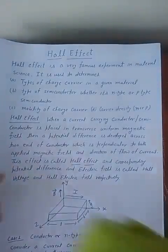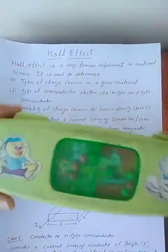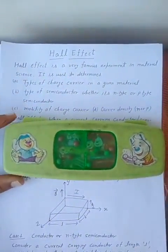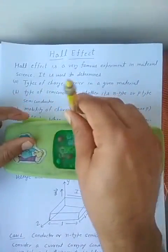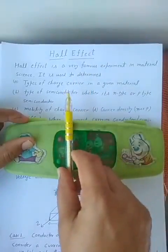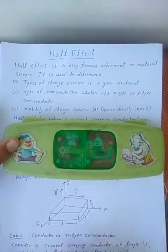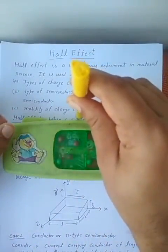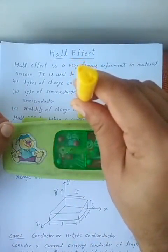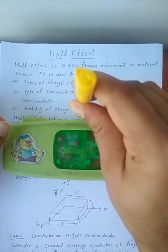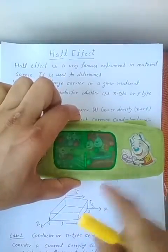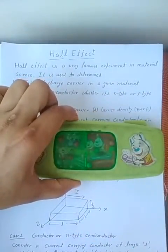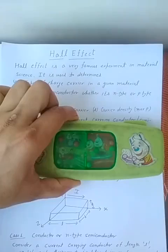Let us consider this type of case. If we assume this is the x-direction, this is the y-direction, and this is the z-direction — if current is flowing in this direction and the magnetic field is applied along this perpendicular direction, then a voltage is developed which is perpendicular to both, such that across the front and back ends, a potential difference is created. This effect is called Hall Effect.